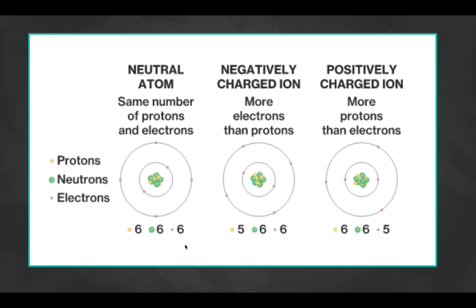Looking at the diagram: the leftmost atom is neutral — same number of protons and electrons. The middle picture shows more electrons than protons (six electrons, five protons), giving a minus-one charge. The rightmost picture shows more protons than electrons, making a positively charged ion — one more proton than electrons means a plus-one ion.